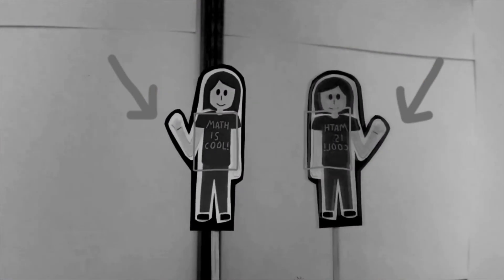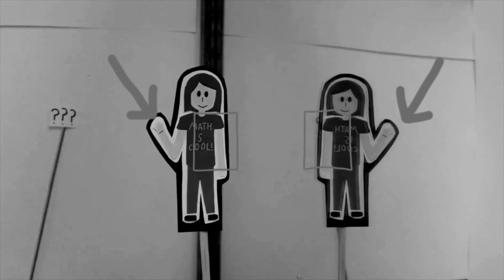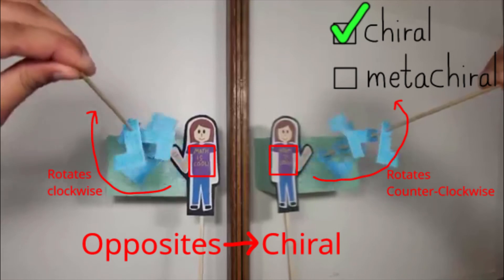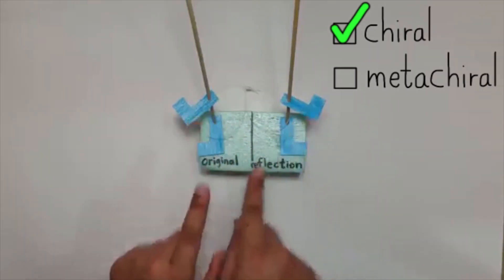This reminds me of how my shirt looked opposite in the mirror. My shirt is a chiral object, so this tower must also be a chiral object, since the reflection cannot be acquired by rotating the original in any way. Since you cannot get the reflected object by doing the same set of transformations performed to the original, the object is metachiral.